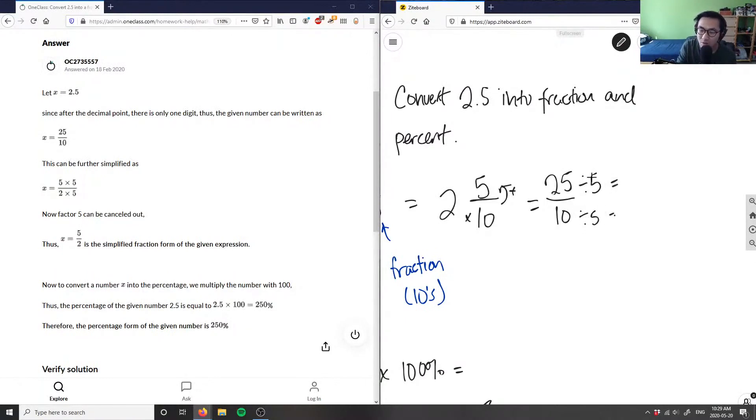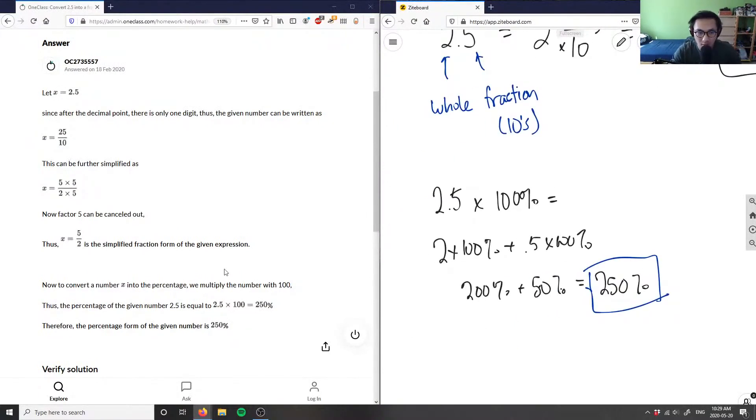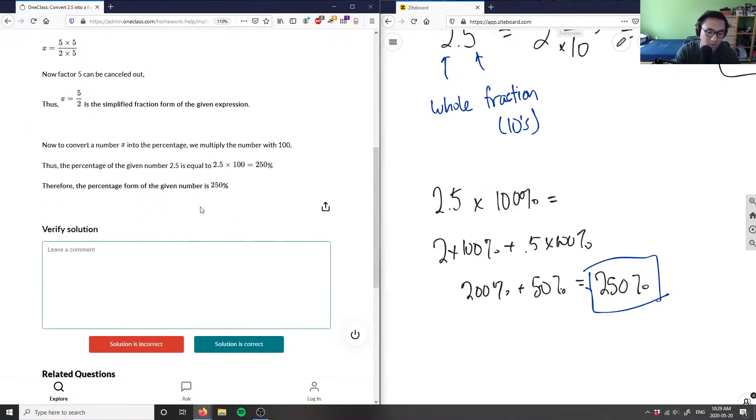This is going to equal 25 divided by 5 here is 5, and 10 divided by 5 here is 2. So you get 5 over 2 here is the reduced form of the fraction. And they got 5 over 2 as well, which is actually really good. And 250 is our percentage form of the given number. So the solution here is correct.